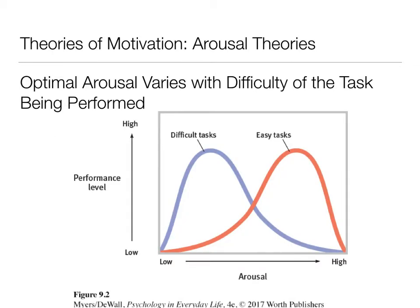Optimal arousal really varies depending on the kind of task being performed. If you're taking a test or working on a hard math problem, you don't want to be in a busy, noisy room. When doing a difficult task, you want low arousal because the task itself is providing arousal. However, when doing an easy task, you can perform those under higher levels of arousal. So our performance on difficult tasks is much better in a low arousal state, whereas for easy tasks, optimal performance occurs at a much higher arousal level.